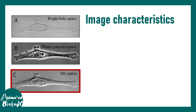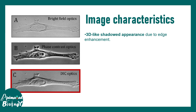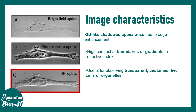Now let us talk about the image characteristics. It has a 3D-like shadow cast effect where the edges are really crisp and sharp, unlike phase contrast microscopy. One can imagine this to be an upgraded and more rectified version of phase contrast microscopy. Lastly, it is good for observing transparent, unstained, and even live cells.